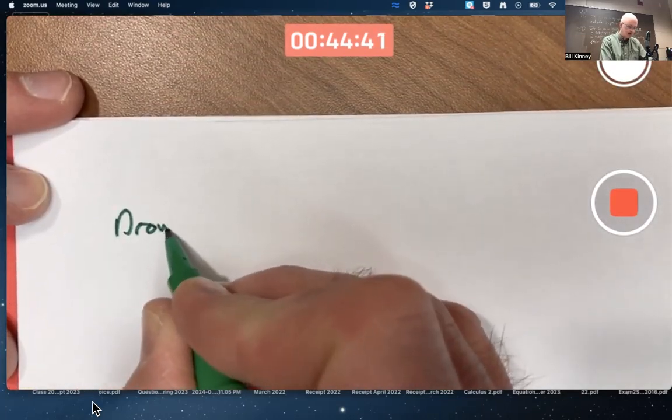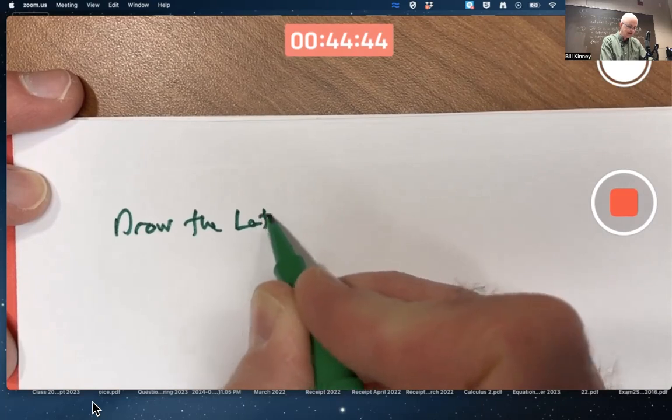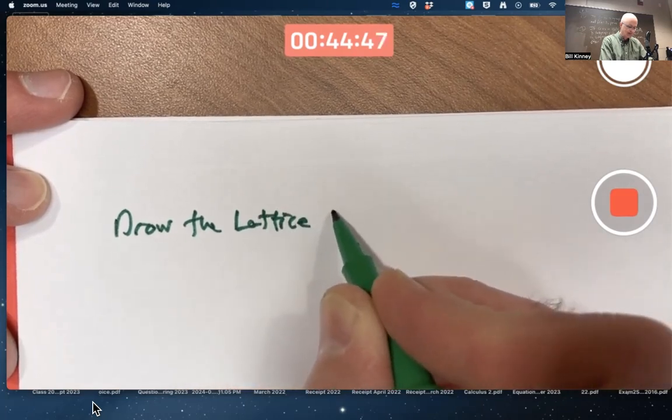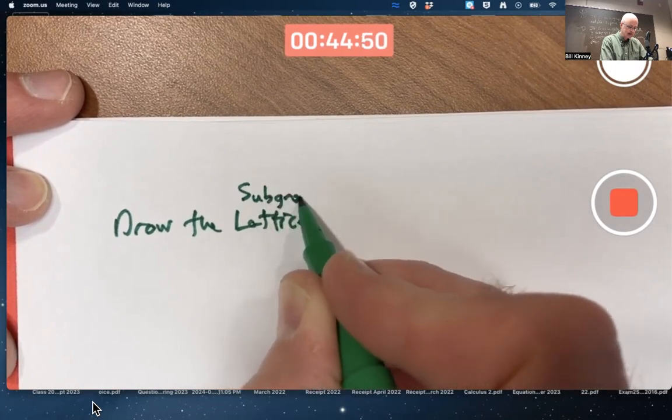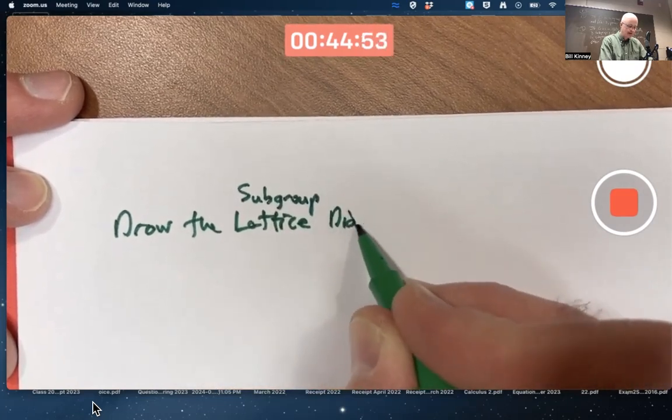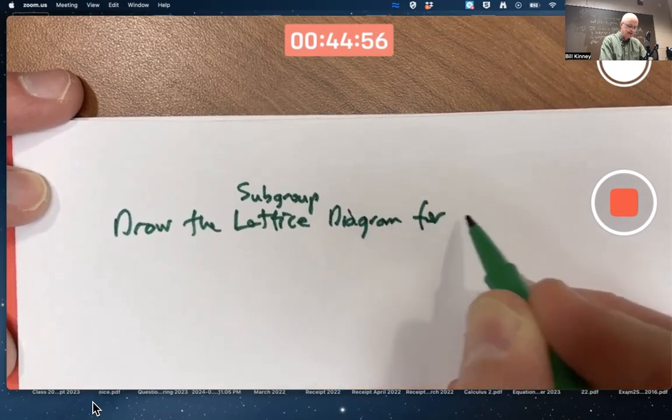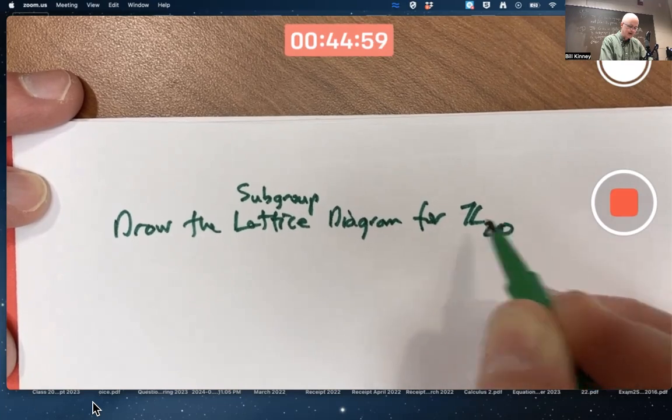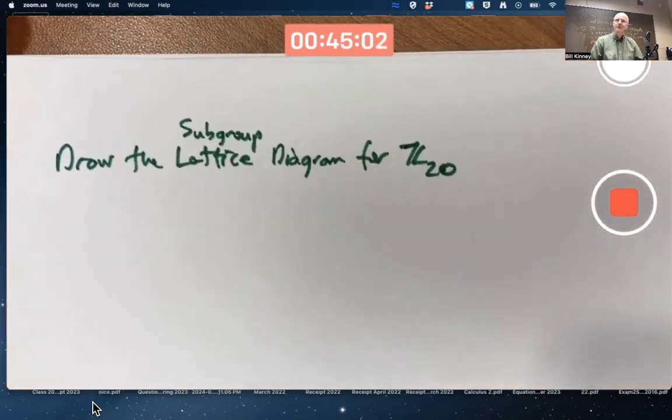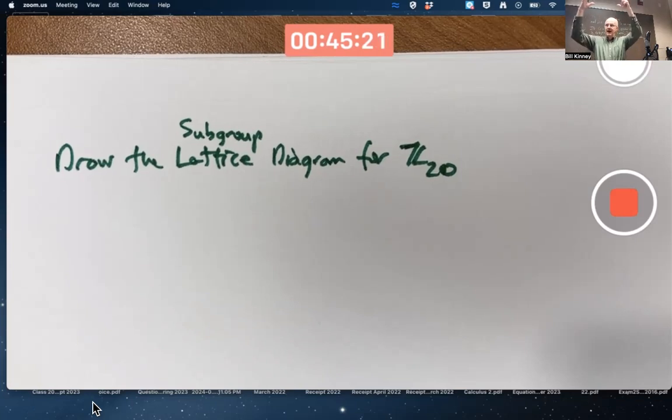Let's draw the lattice diagram for Z20, a cyclic group of order 20. I'm talking about essentially a directed graph, like in discrete math, showing the structure of how all the subgroups of the given group are related to each other, with the whole group, the biggest group on the top, and the trivial subgroup, the smallest subgroup on the bottom.